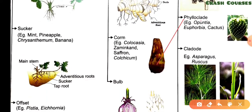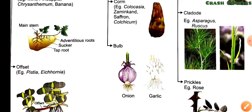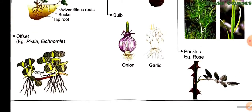The basic difference between phyloclade and cladode is: in phyloclade, the whole stem develops like a leaf, but in cladode, only some part of the stem develops like a leaf — not the whole plant. Examples of cladode are Asparagus and Ruscus. The next type is prickles — they develop from the epidermis and can be easily broken.